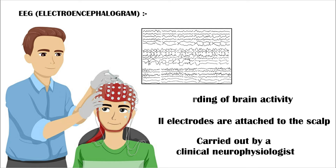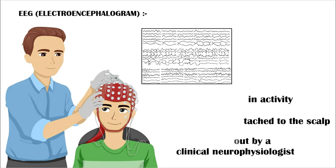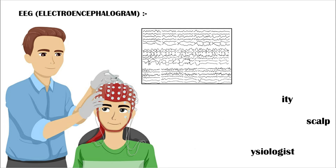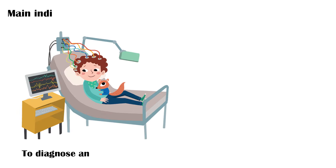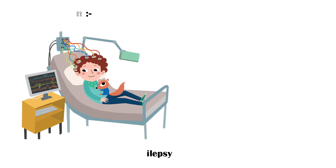An electroencephalogram can be used to help diagnose and monitor several conditions affecting the brain. The main use of an electroencephalogram is for the diagnosis and monitoring of epilepsy, a condition characterized by recurrent seizures. Some other indications of an electroencephalogram include the following.